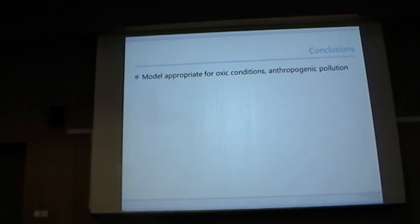So, as a conclusion, we have implemented a model which can model the fate and transport of mercury under some specific conditions: oxic conditions and anthropogenic contamination.